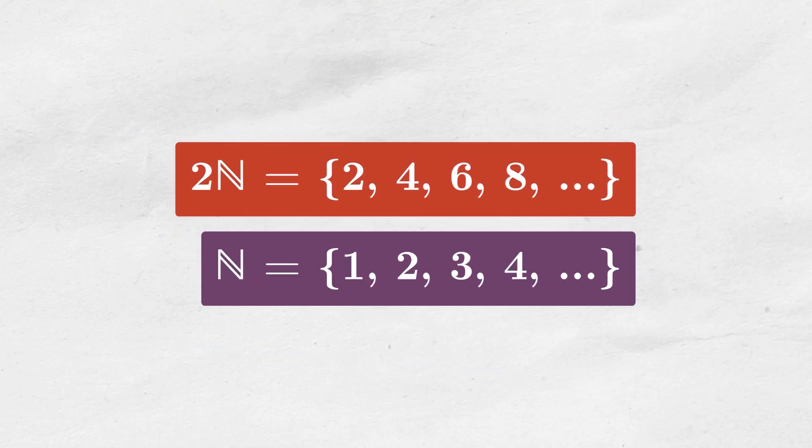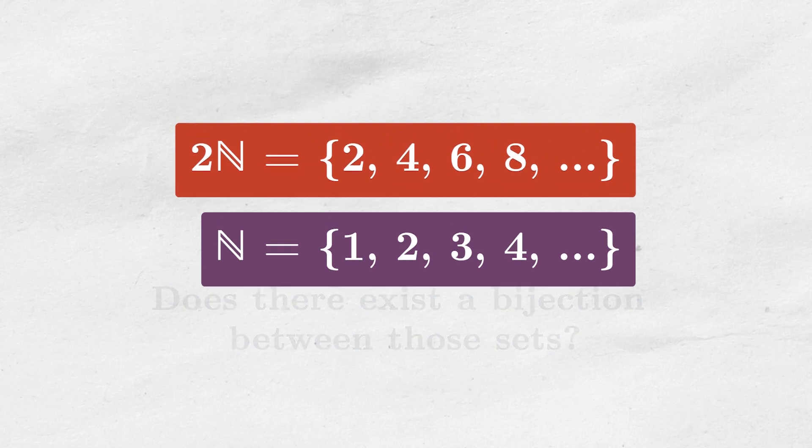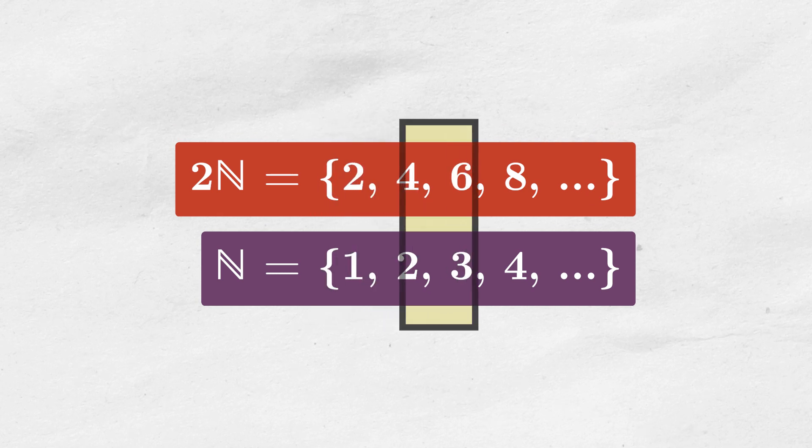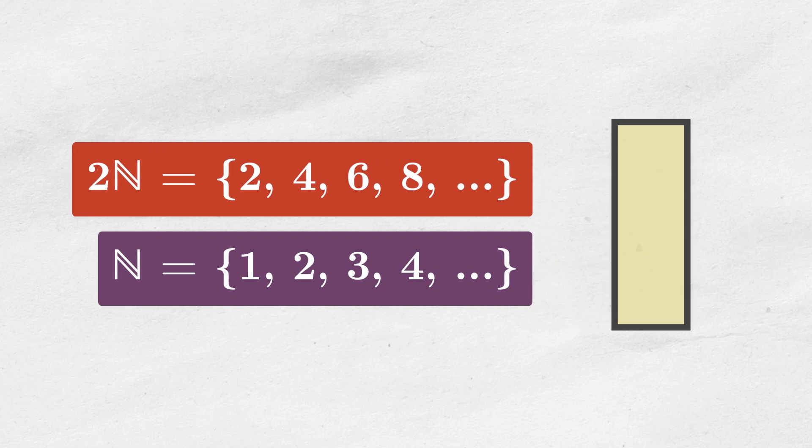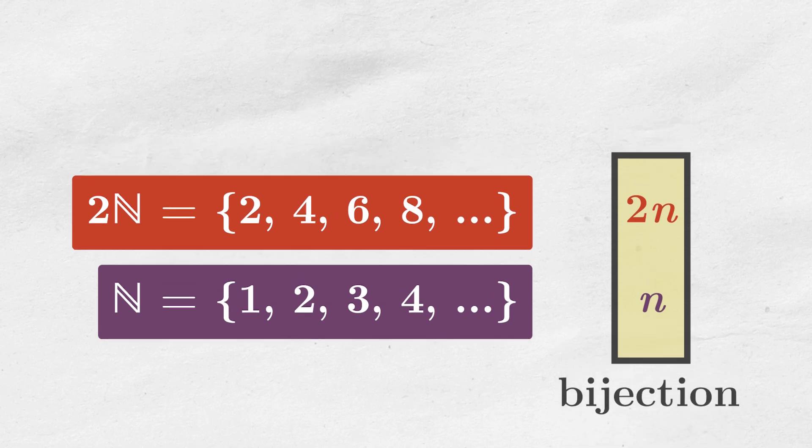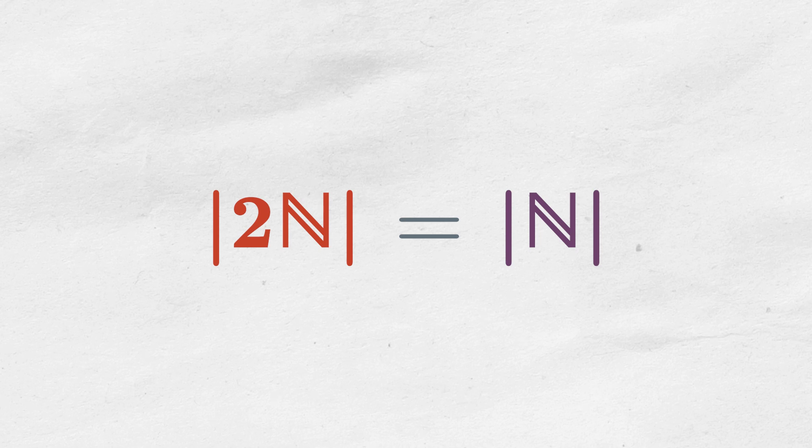Now, what about the set of even numbers and the set of natural numbers? Does there exist a 1 to 1 correspondence between those? Of course it does. You can pair 2 with 1, 4 with 2, 6 with 3, and generally you can pair 2n with n for any natural number n. Such mapping is indeed a bijection, therefore the set of even numbers has the same cardinality as the set of all natural numbers.